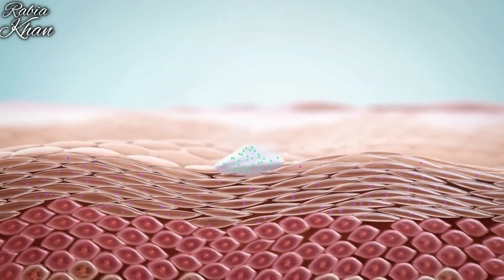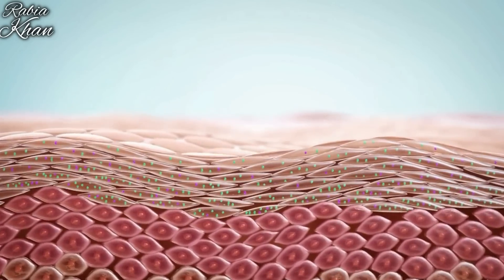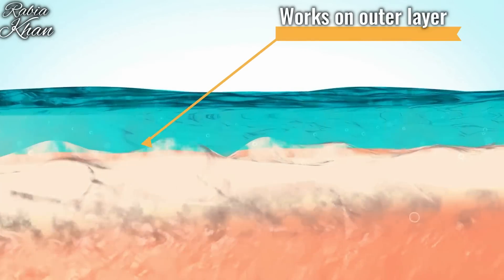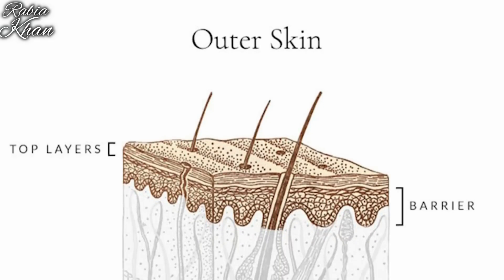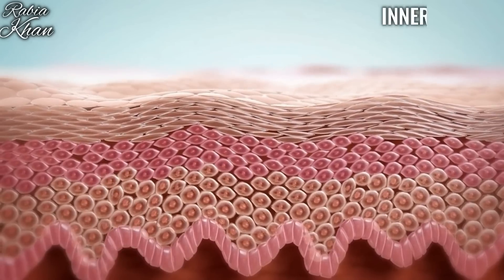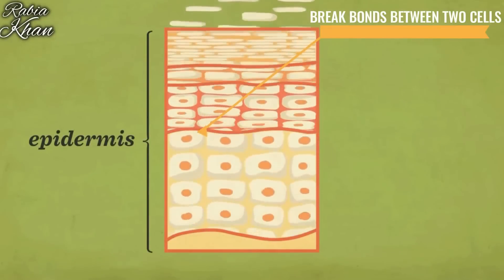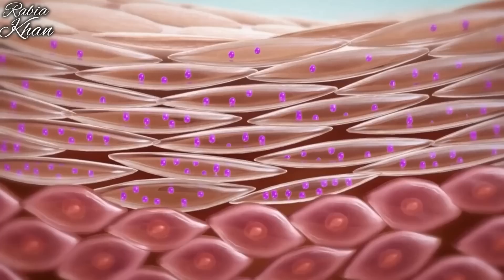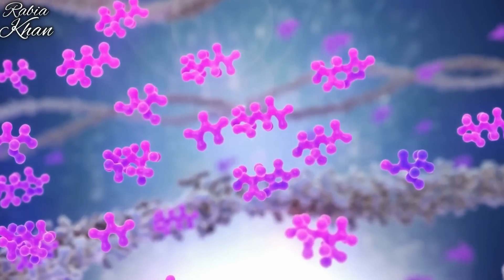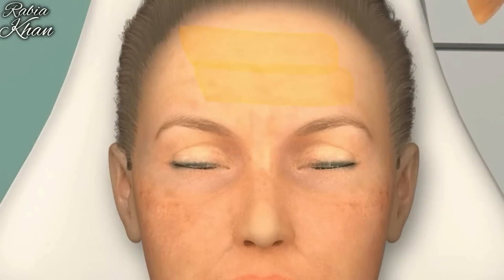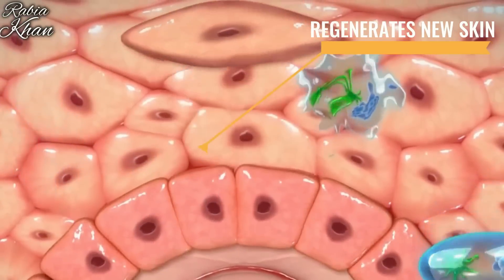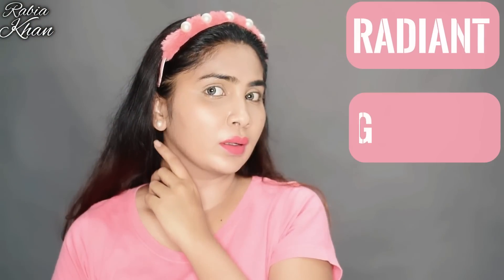The reason glycolic acid is most effective is its small molecular size — it's the smallest among AHAs. Being water-soluble, it penetrates deep into your skin and can work on the outer layer. The outer layer of our skin has dead cells. Glycolic acid breaks the bond between dead cells and fresh inner cells, exfoliating your skin chemically — not physically. This bond-breaking causes a peeling effect where dead cells come out and fresh new skin is revealed.